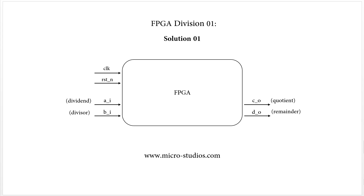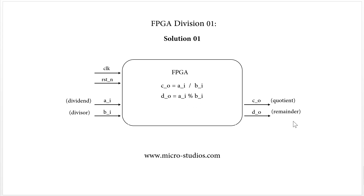So this is the system block for the FPGA division. So how do we do the division? For the regular math, we will do it like this. This is the first equation to get the quotient, and the other equation will be like this to get the remainder. For our FPGA in Verilog code, we can directly use this equation.